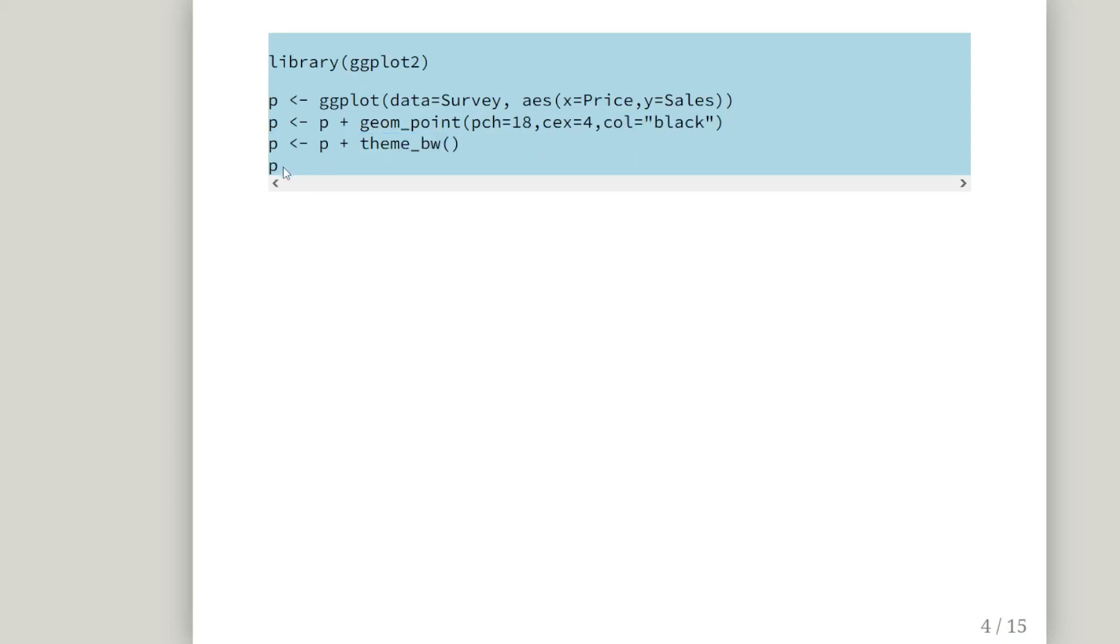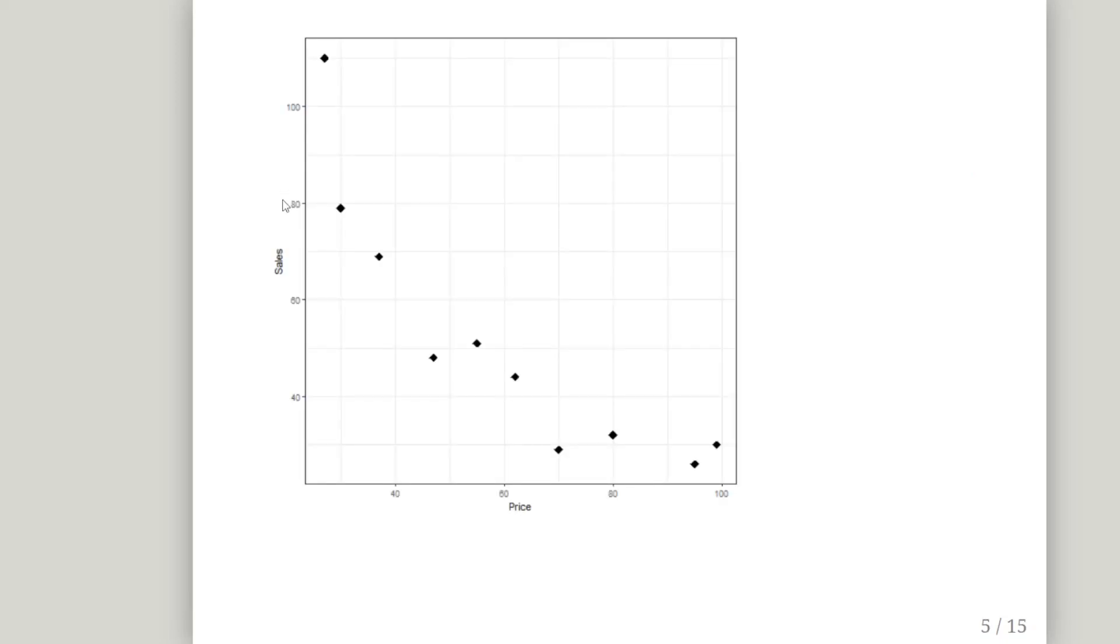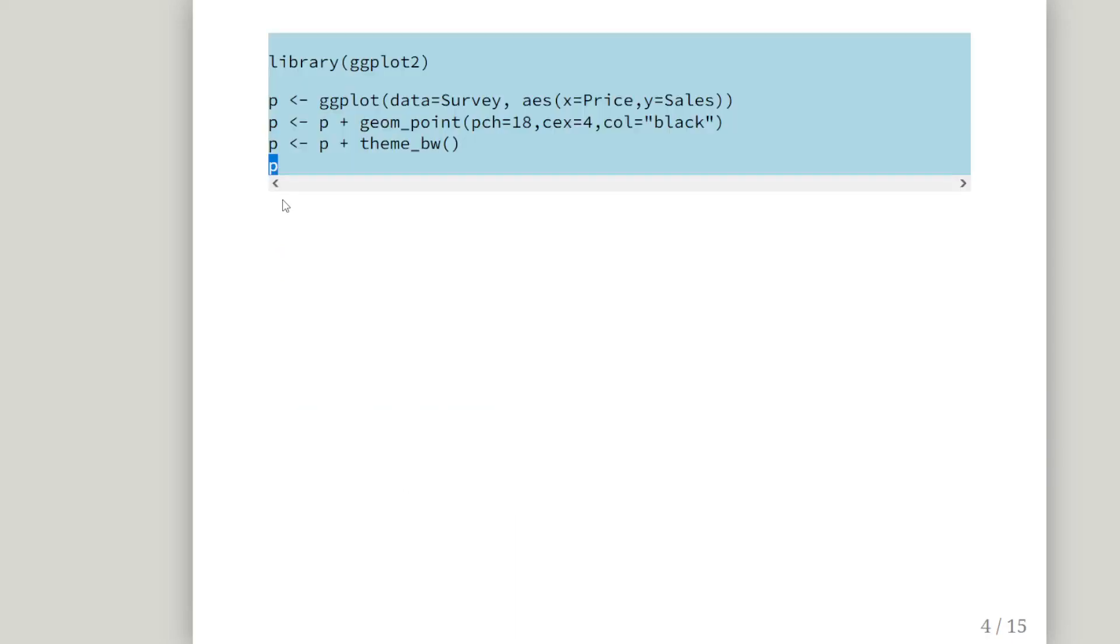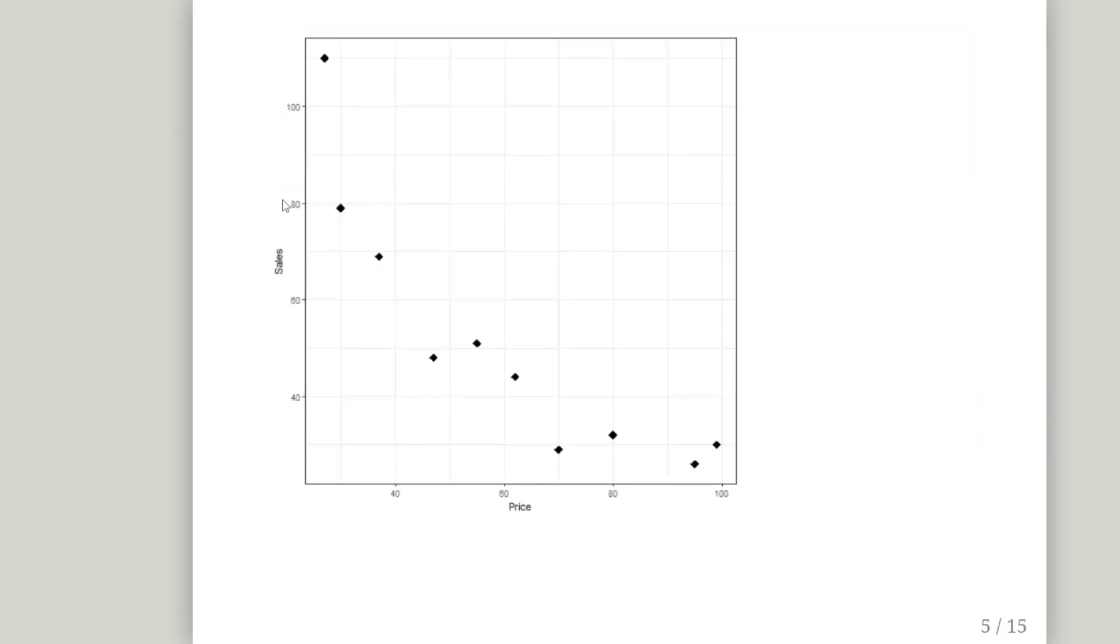Just to make it a little bit easier to read, I am going to change the character settings to character, plot character 18, size equals 4, and color equals black. You know, you can just try a few of those out. And then I am just going to set a blank, black and white theme on the background. So I have created my plot P, so I just want to print it out now. So I am just going to type P, and that is what I get there.